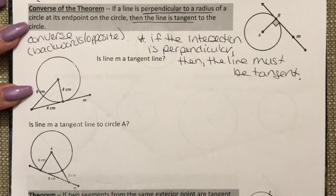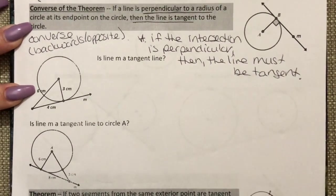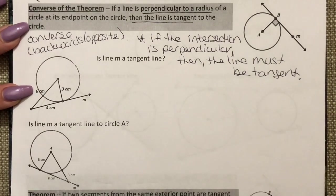So pretty much what we're going to be doing is in order to prove whether a line is tangent or not, it should fit A squared plus B squared equals C squared. So for example this says is line M a tangent line.